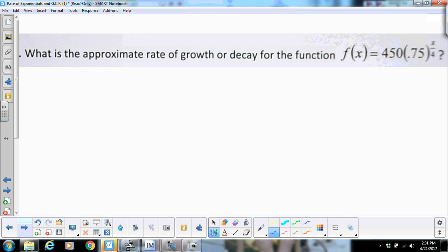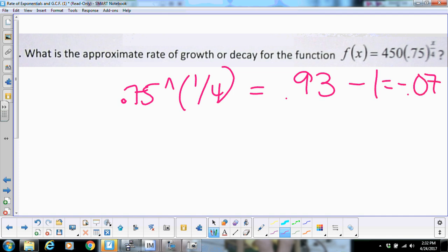Alright, the next couple are the ones we did today in class. Remember, you're going to break this apart, so it's actually going to be 0.75 to the 1 fourth power. So we're going to have to type that in our calculator. And that gives me 0.93. So we're going to subtract one from that, which is going to give me negative 0.07, which if I move it two places, is 7%, and that is decay.